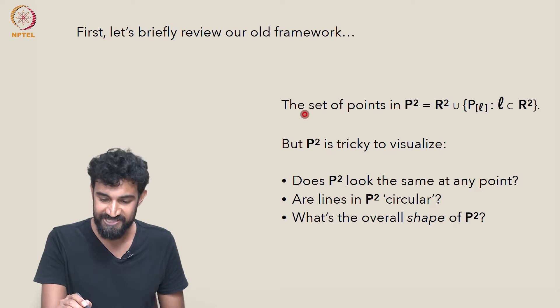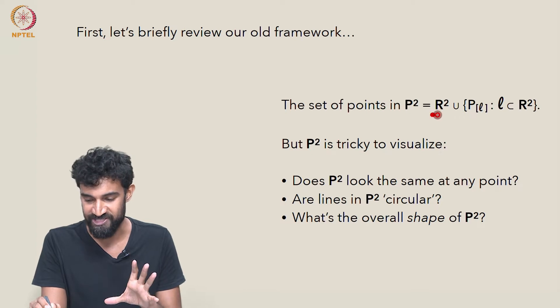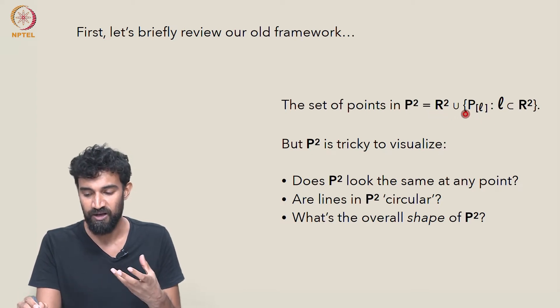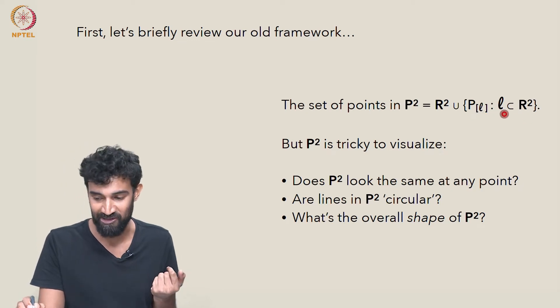which just states that every line is incident with at least two points. So the set of points in P² is just the set of points in R²,